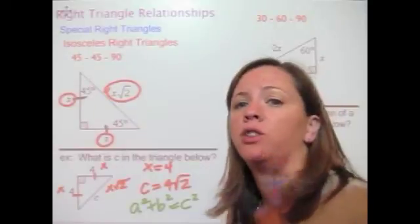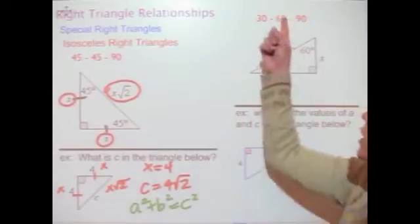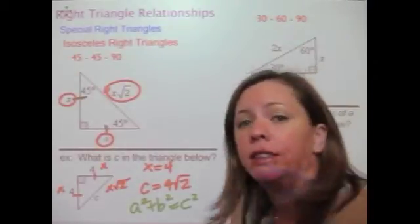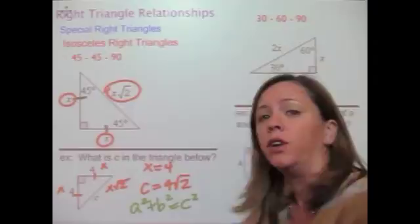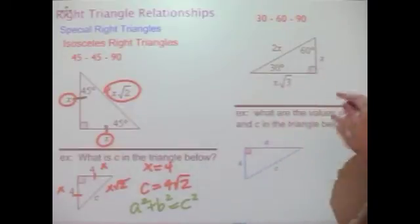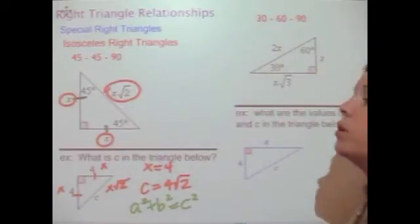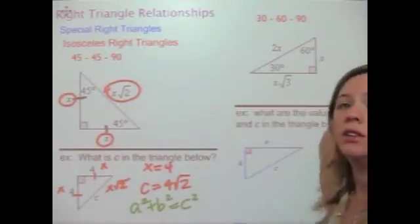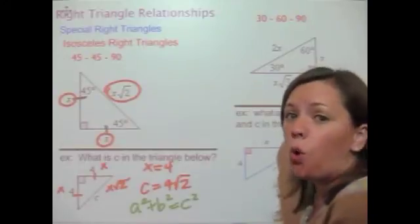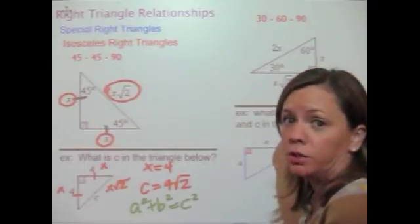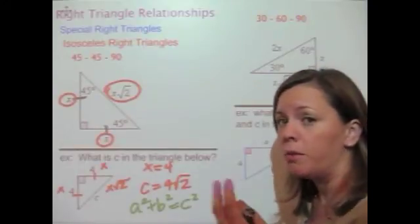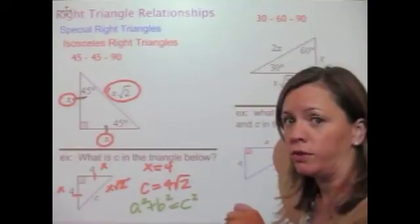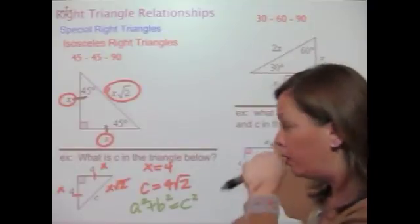Now let's look at the other triangle: the 30-60-90 triangle. You're going to look for a 90-degree angle, a 30-degree angle, and/or a 60-degree angle. Remember, the angles of a triangle add up to 180, so if you know two you can always figure out the third.